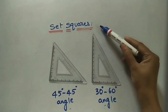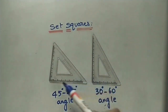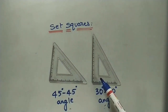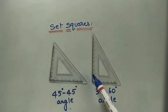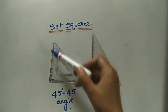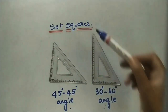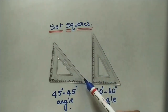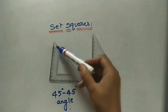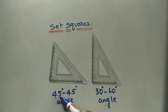Let us discuss set squares. Set squares are a set of two right angle triangles. This angle is 90 degrees, called a right angle. The set of the other two angles in this triangle is 45 and 45 degrees — we can call it the 45-45 degree set square.